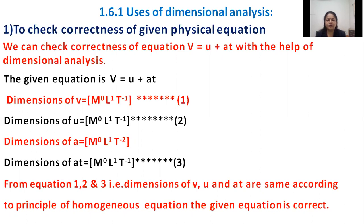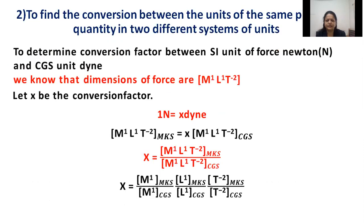Since all terms have the same dimensions, this equation is correct according to the principle of homogeneity. According to the homogeneity principle, if both LHS and RHS have the same dimensions, then only we can say the equation is correct. Like this, we can check any physical equation using dimensional analysis.